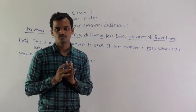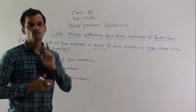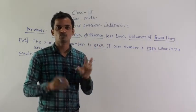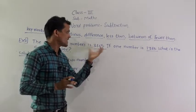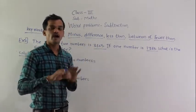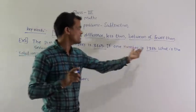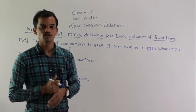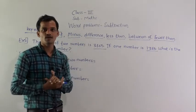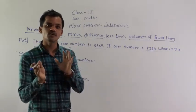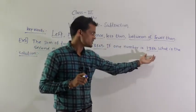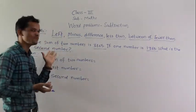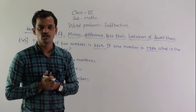After reading the example, we know what is given. The sum of two numbers is 3865, meaning if we add those two numbers we get 3865. One of the two numbers is given as 1365, and we have to find the second number. If we subtract the first number from the sum, we will get the second number. Note: the result of addition is called the sum.